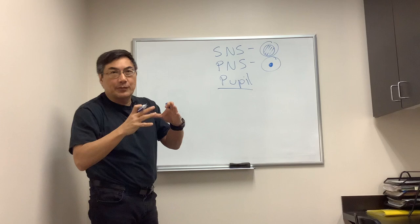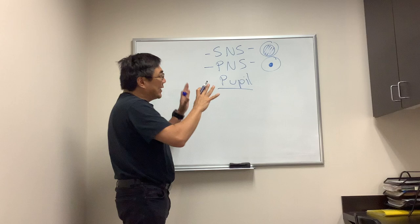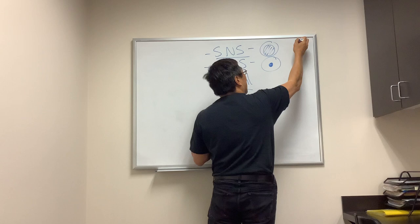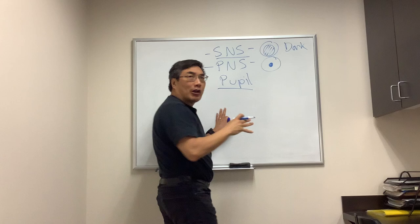If you have damage in either of these systems, it'll cause anisocoria, because there'll be a difference in the size of the pupil, and it will be different in different lighting conditions. Because in the sympathetic nervous system, you've got a dilation problem, it'll be worse in the dark, and it'll be the smaller pupil that's the problem.